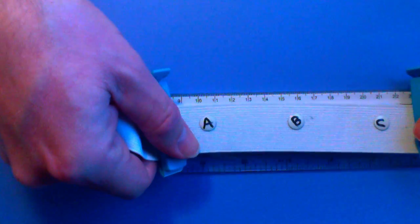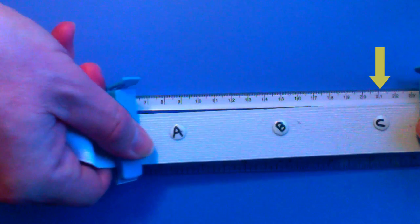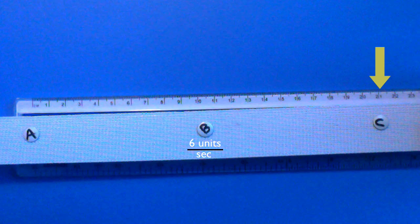Galaxy C sees much the same thing. They'll see galaxy B receding away at 6 units per second, and galaxy A at 12 units per second, twice as fast, because it's twice as far.